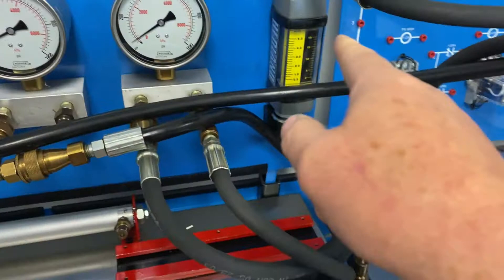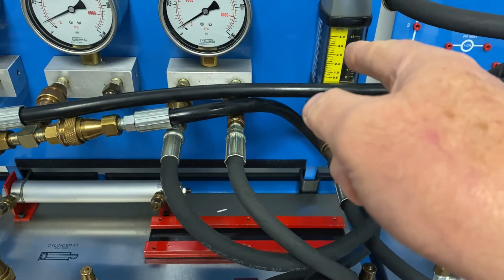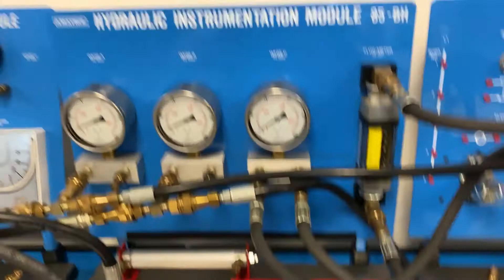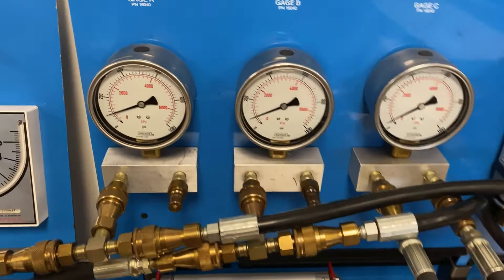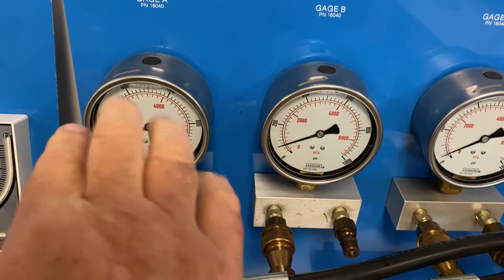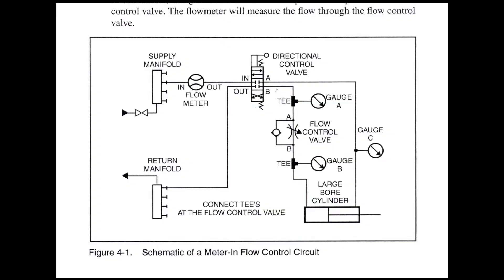And really what we're doing is we've got fluid pumping into our DCV. Then it's going through our flow meter, so we can indicate flow. We know we've got fluid flowing.